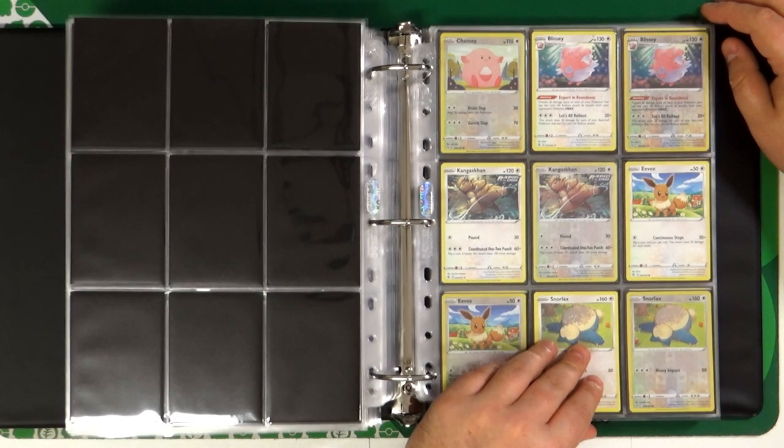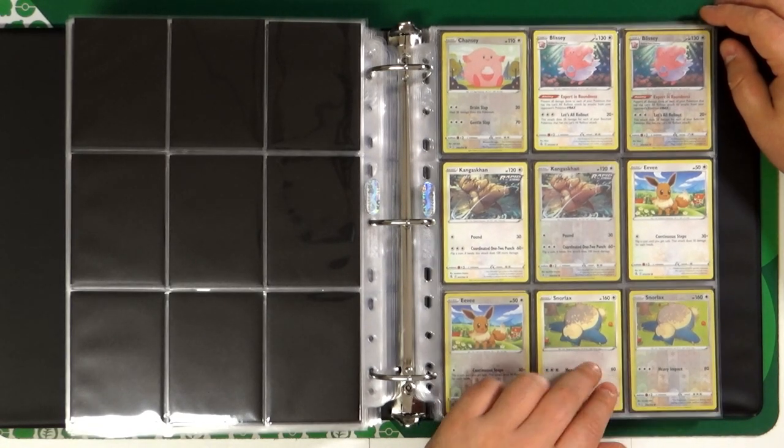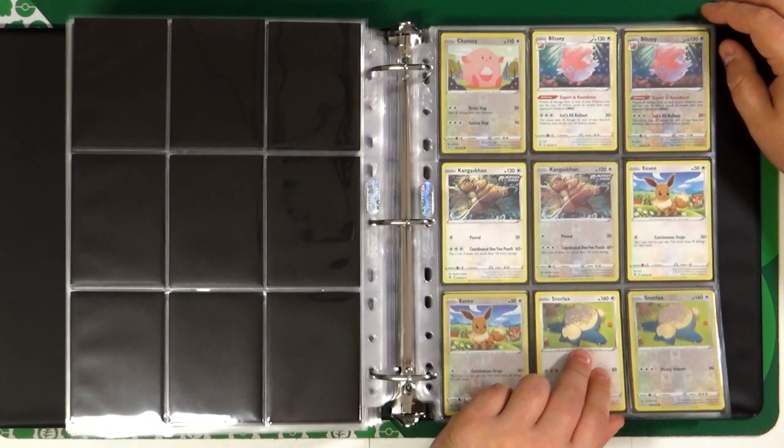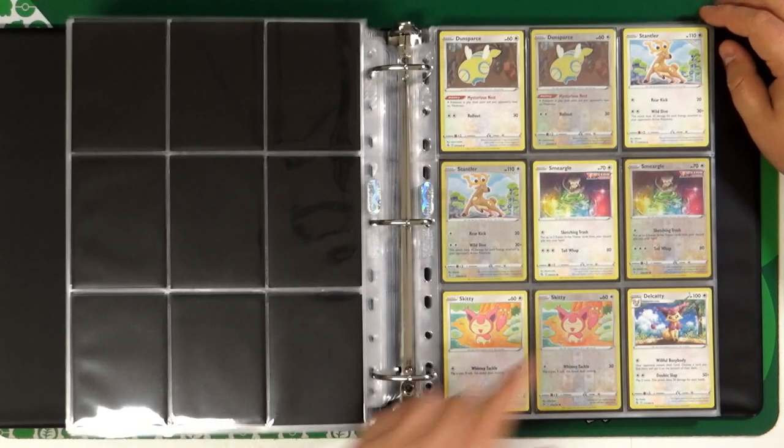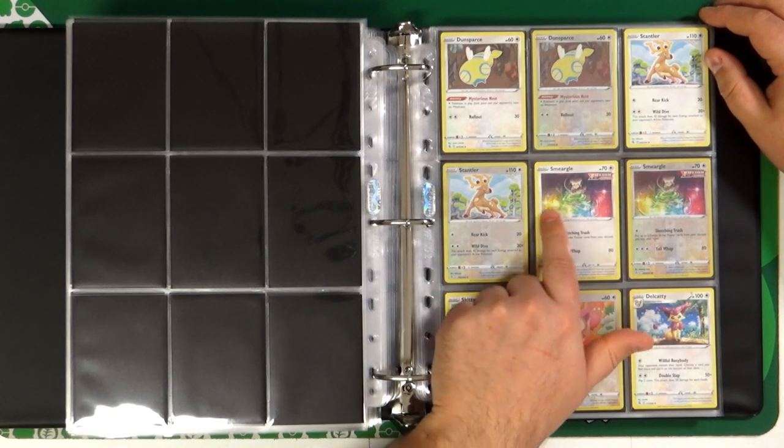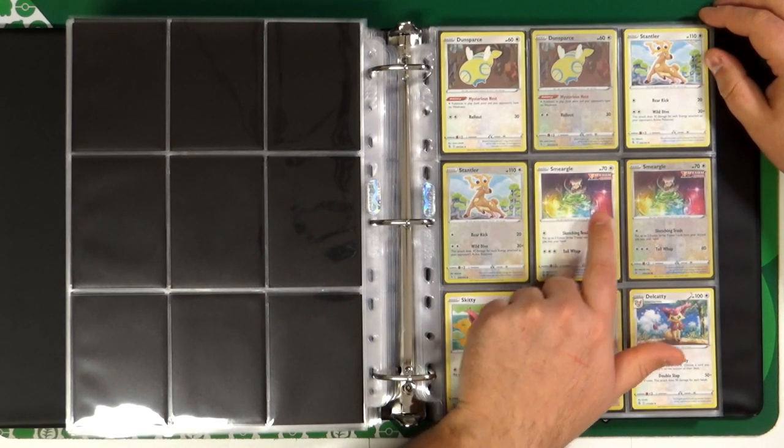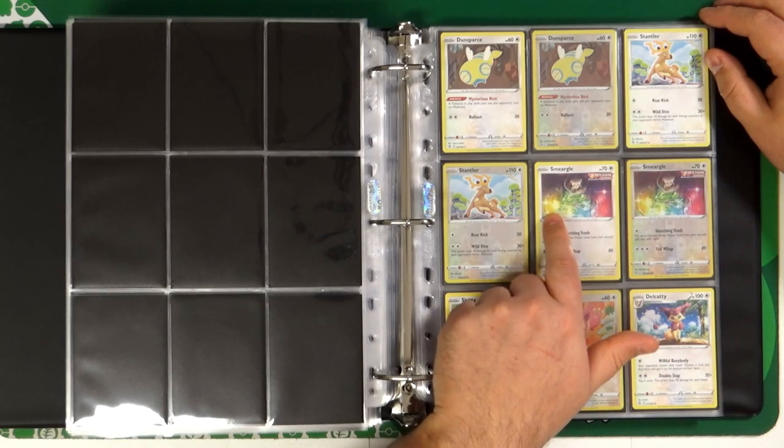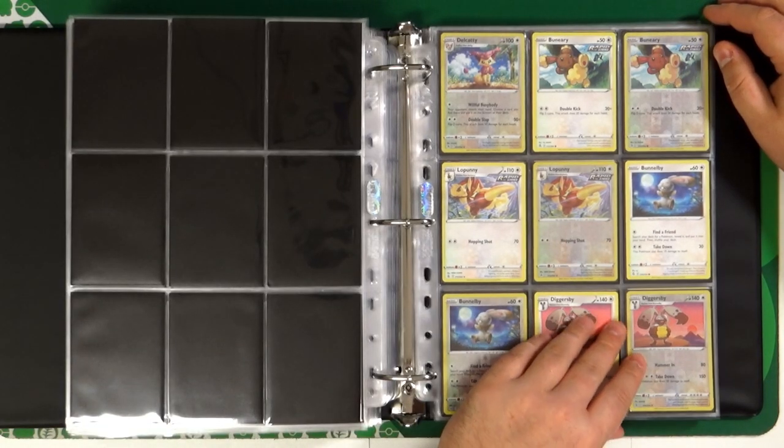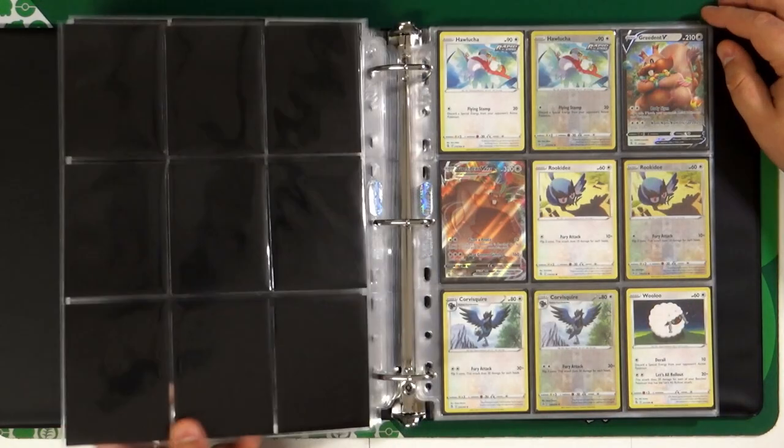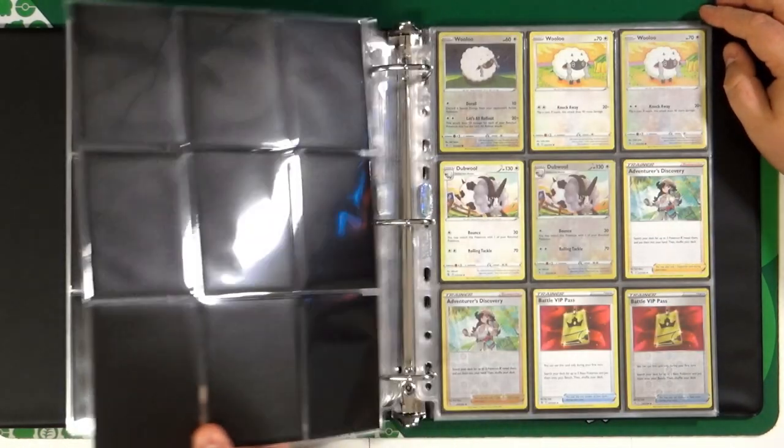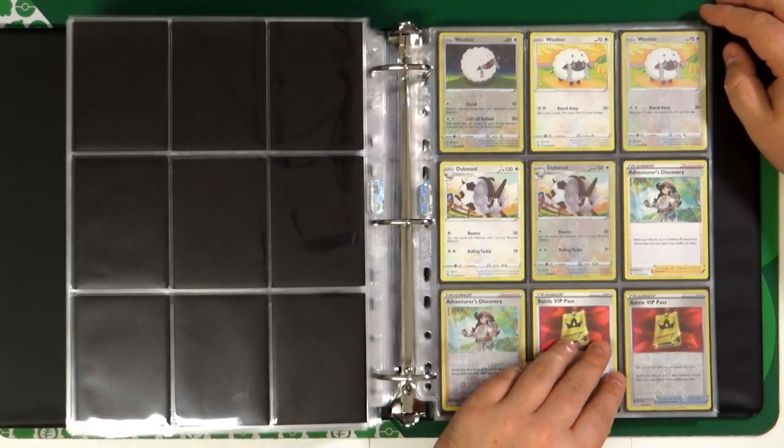We have Blissey, Eevee, Snorlax with a masterpiece artwork. Smeargle, also a beautiful artwork with this water in the four colors: red, green, yellow and blue. Bunnelby, Diggersby, Greedent, and Greedent VMAX, the last V Pokemon of this set.